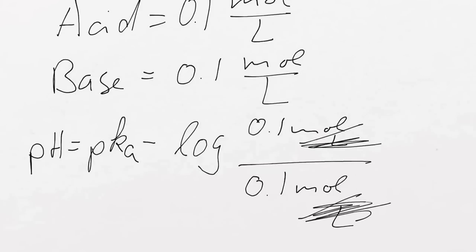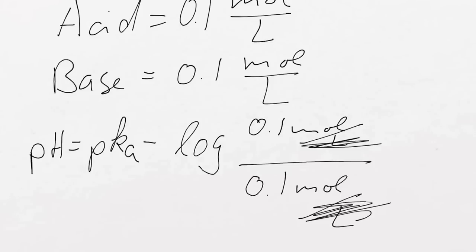So if you take it that way, the buffer pH does not depend on your volume. It does not depend, really, on the total concentration. That is the reason why you were able to dilute your buffer in the practical. And you should have observed that there is hardly any pH change when you dilute your buffer. So buffers are usually fairly resistant against dilutions or changes in the volume.